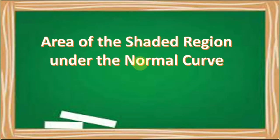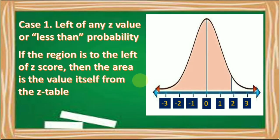Let us now discuss how to find the area of the shaded region under the normal curve. The shaded region has three cases. Case number one: left of any Z value, or less than probability. If the region is to the left of a Z-score, then the area is the value itself from the Z-table.